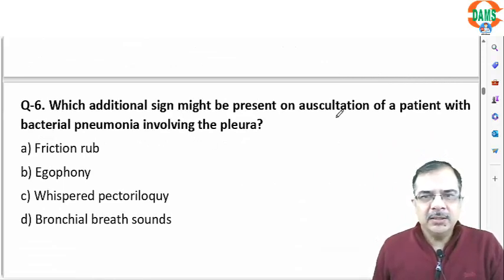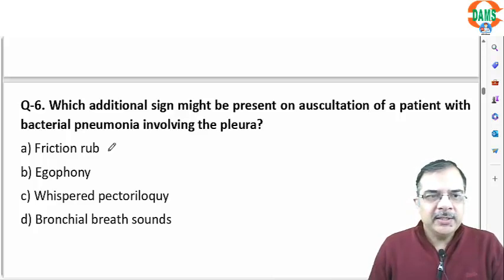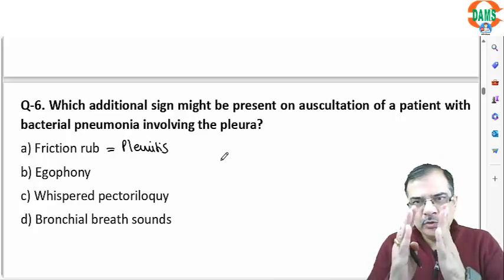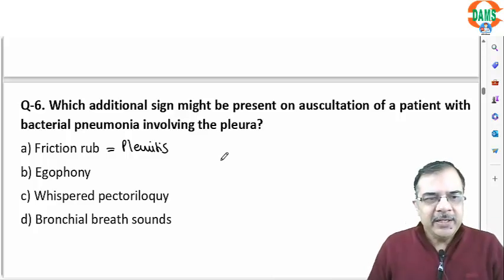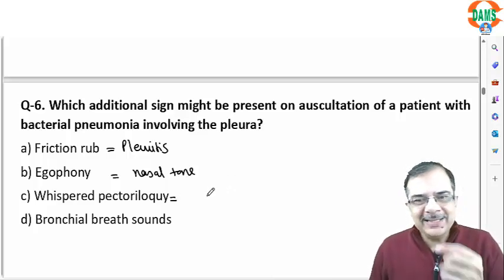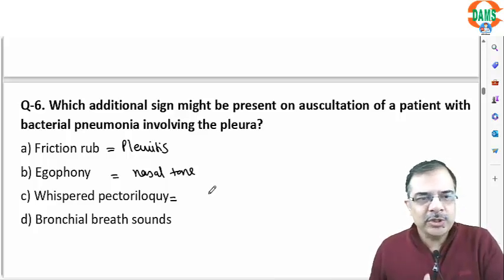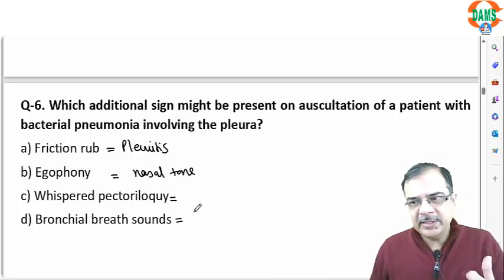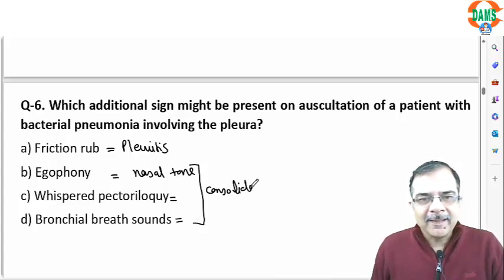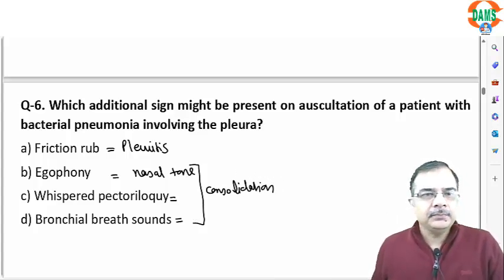Question 6: a patient has bacterial pneumonia with pleural involvement. On auscultation, the additional sign present is a friction rub, suggestive of pleuritis — a crackling sound when two layers of inflamed pleura rub against each other. Egophony is a nasal tone heard on auscultation. Whispering pectoriloquy means whispered words are heard clearly through the stethoscope. Bronchial breath sounds mean increased intensity of sound — all three are signs of consolidation. The answer is option A, friction rub.